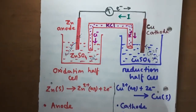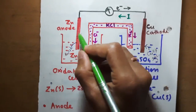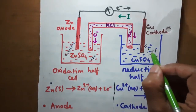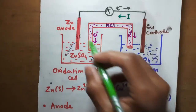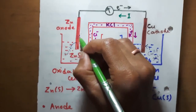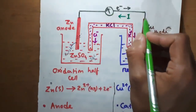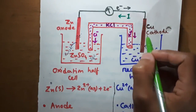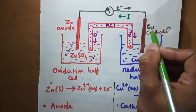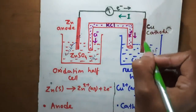Oxidation takes place in the zinc part and reduction takes place in the copper part. Zinc atoms in the zinc electrode are converted to zinc 2 plus ions, leaving two electrons behind. When we connect the two electrodes, these two electrons move from the zinc electrode to the copper electrode, where copper 2 plus ions from the solution take up these two electrons to convert into solid copper, depositing on the electrode.